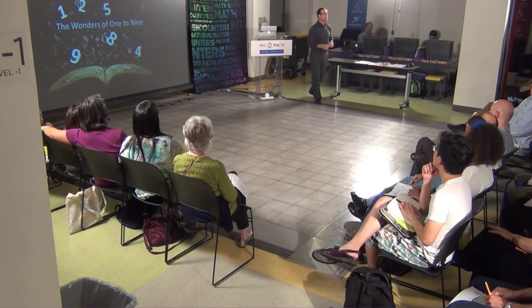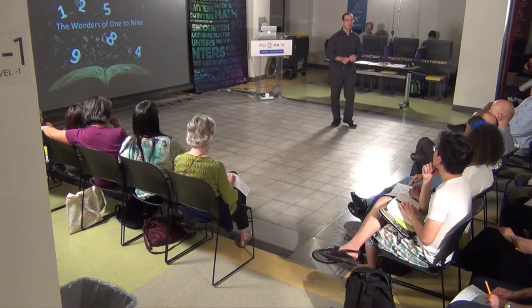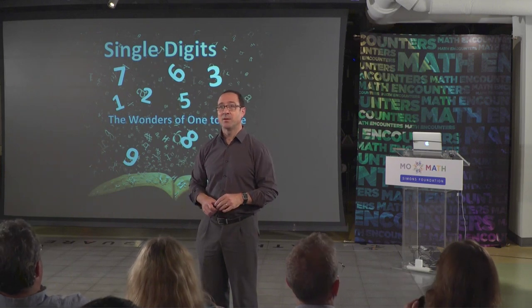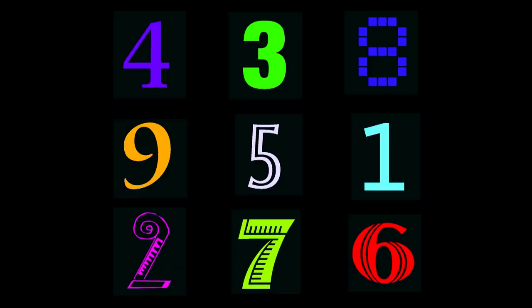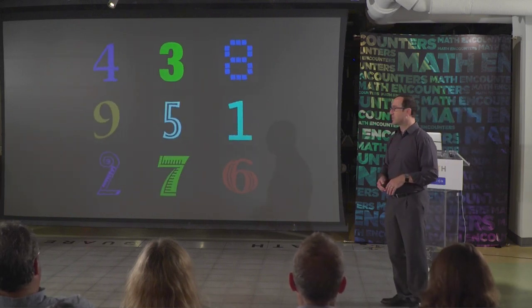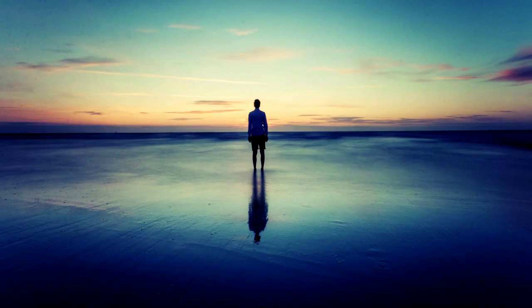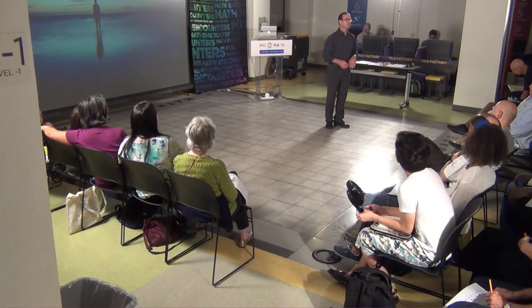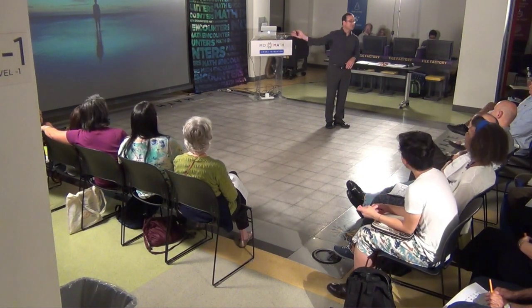Mathematicians get excited about all kinds of different numbers — exciting, sexy numbers like Pi and E — but they miss the allure that just comes with the simple numbers from 1 to 9. So what I want to do this evening is tell you one interesting fact that you probably don't know about each of the numbers from 1 to 9. We'll start with the number 1. I couldn't think of something simple to say for 1 except it's the loneliest number.